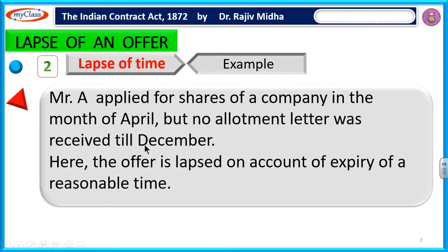A particular example: Mr. A applied for shares of a company in the month of April, but no allotment letter was received till December. Here the offer is lapsed on account of expiry of a reasonable time.